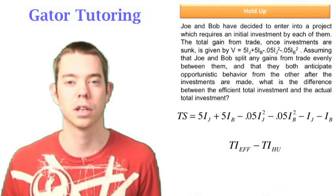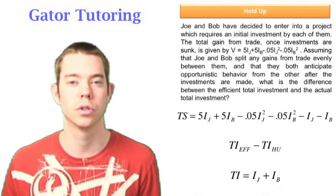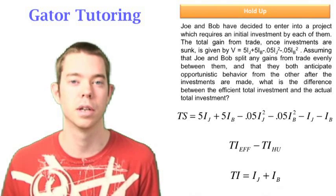And we know, again, we're going to be looking at total investment efficient minus total investment holdup, where total investment is equal to the sum of Joe's investment and Bob's investment.